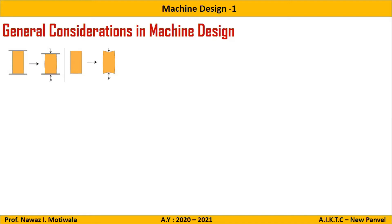All of you gave the nearest answer and I will club all that. The first consideration in machine design is: what is the type of load acting on the component, and what is the stress developed by that? So the first point in general considerations in machine design is different types of load and stresses caused by the load.